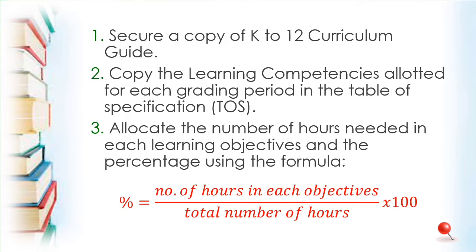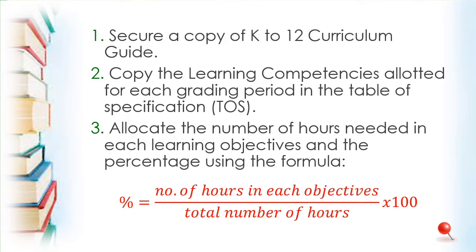Learning competency number one was taught in three weeks, equivalent to 15 hours. Learning competency number two is 5 hours and learning competency number three is 10 hours, for a total of 30 hours. To get the percentage value: 15 divided by 30 times 100 is 50%. Learning competency number two: 5 divided by 30 is 17%, and 10 divided by 30 is 33%.